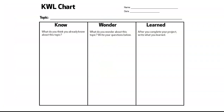A KWL chart asks: what does the student already Know about the topic, what do they Wonder about it, and after completing the project, what have they Learned? This is typically used for non-fiction text, science, social studies, and some math activities. Using a blank piece of paper, do a trifold, and write Know, Wonder, and Learned at the top to complete as you go through the assigned activity.